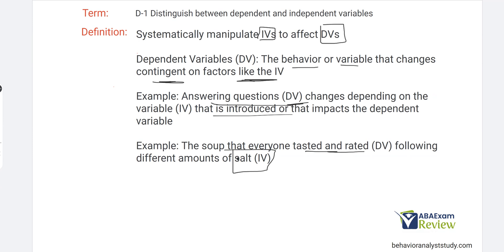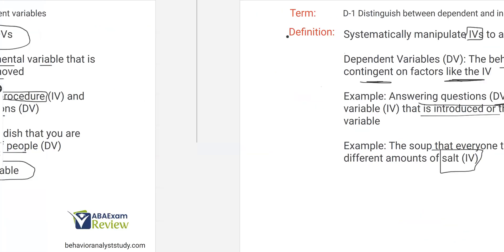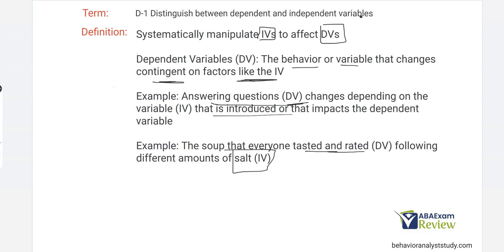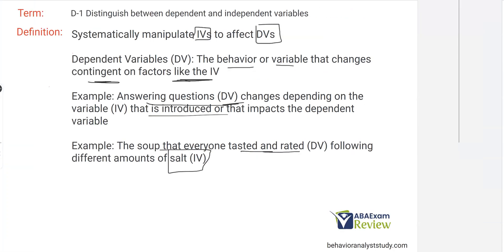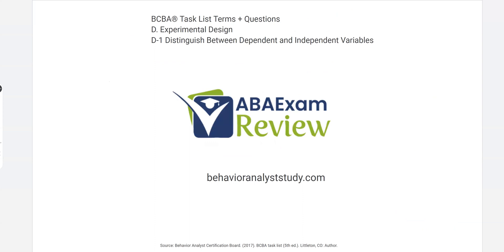For now, focus on the basics: what's an IV, what's a DV? Remember, you control the IV in an attempt to manipulate and affect the DV. And once your independent variable affects the dependent variable and you can predict behavior change over and over again, we have experimental control. Watch this video over and over again until you can internalize IV and DV — it's going to be very important moving forward for experimental design. These are the foundation skills. Watch it over and over again, internalize it — it's going to make the subsequent videos that much easier.